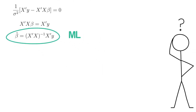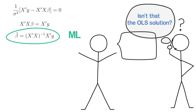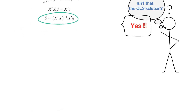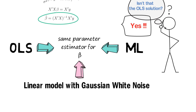Now you look at that and you wonder — isn't that the OLS solution to the problem? Yes it is. So you really see first hand that OLS and ML share the same parameter estimate for beta when you estimate such a linear model with Gaussian white noise errors. I highlight again that this depends crucially on having a Gaussian error and such a linear model setup.